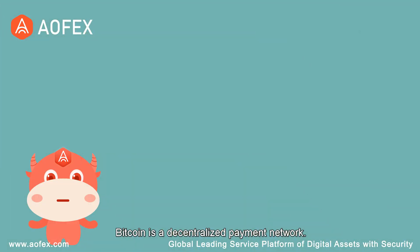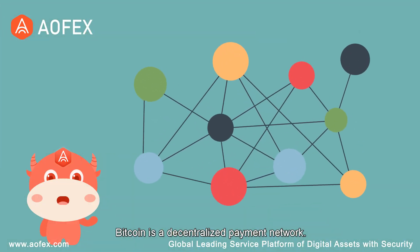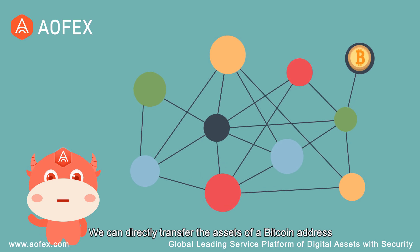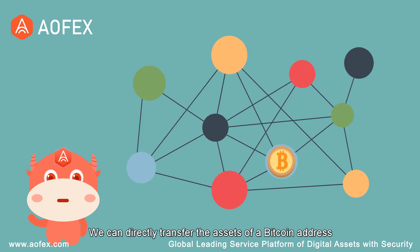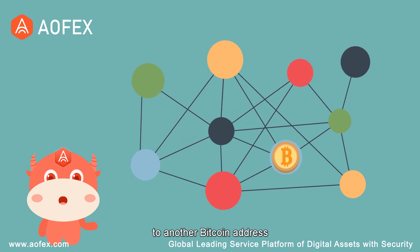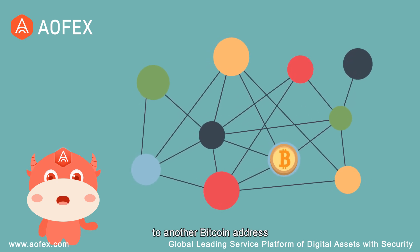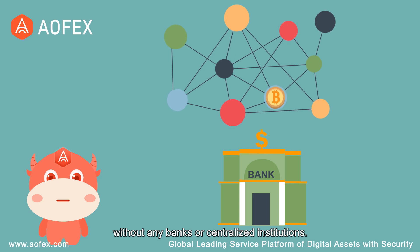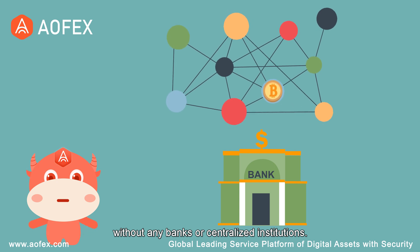Bitcoin is a decentralized payment network. We can directly transfer the assets of a Bitcoin address to another Bitcoin address without any banks or centralized institutions.